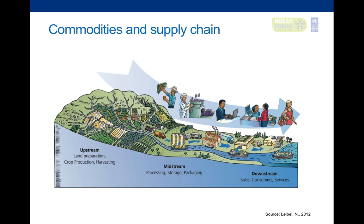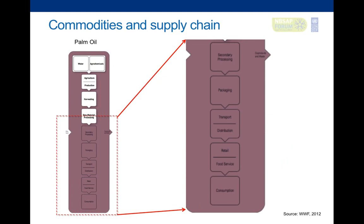There's a series of chain actors linked together by flows of products, finance, information, and services. When we look at those commodities, each one of them has a supply chain. We end up seeing that each commodity has an upstream, a midstream, and a downstream part to the supply chain — being land preparation, production, and harvesting.